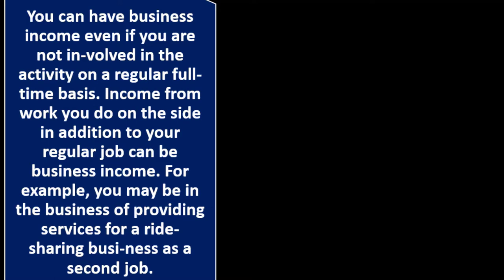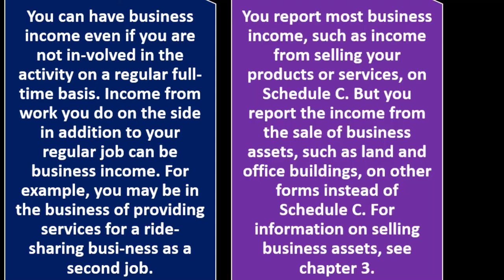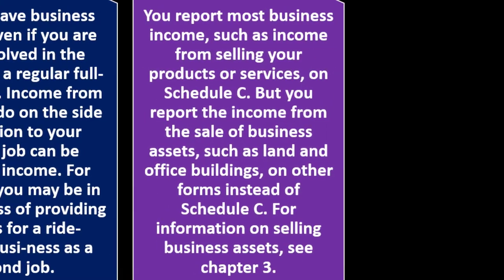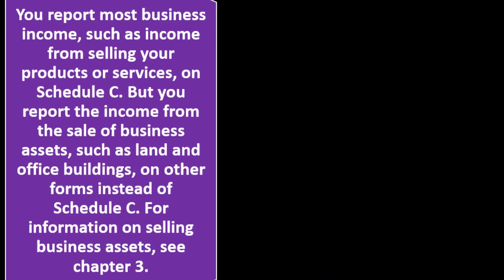For example, you may be in the business of providing services for a ride-sharing business as a second job — that's income. You report most business income, such as income from selling your products or services, on Schedule C. That's the business income for a sole proprietor, unless you're set up as some other kind of entity. But you report income from the sale of business assets, such as land or an office building, on other forms instead of Schedule C.